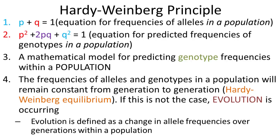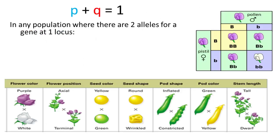As you remember, evolution—we're talking about microevolution in this case—is defined as a change in allele frequencies over generations within a population, not within individuals. We're going to start with the first equation, p + q = 1, and we're going to talk about two alleles. In any population where there are two alleles for a gene at one locus...